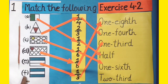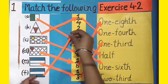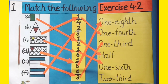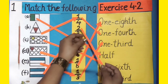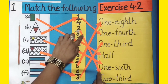Now in part F, out of 3 equal parts, two parts are colourful. So its fraction form will be 2 by 3, and in words it can be written as 2 third. Let's match these two.